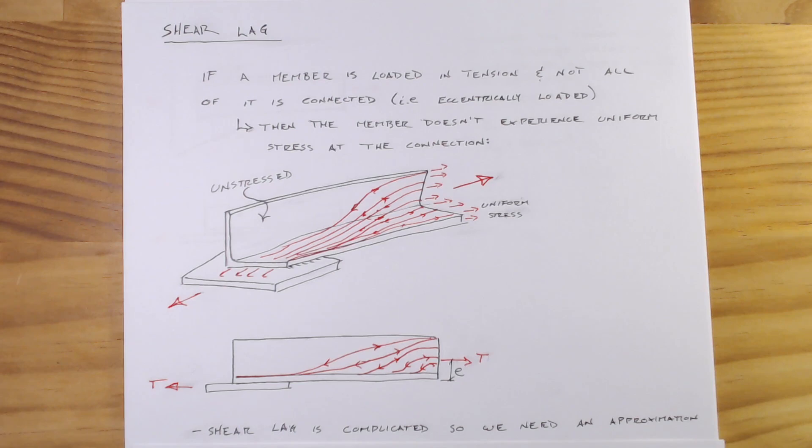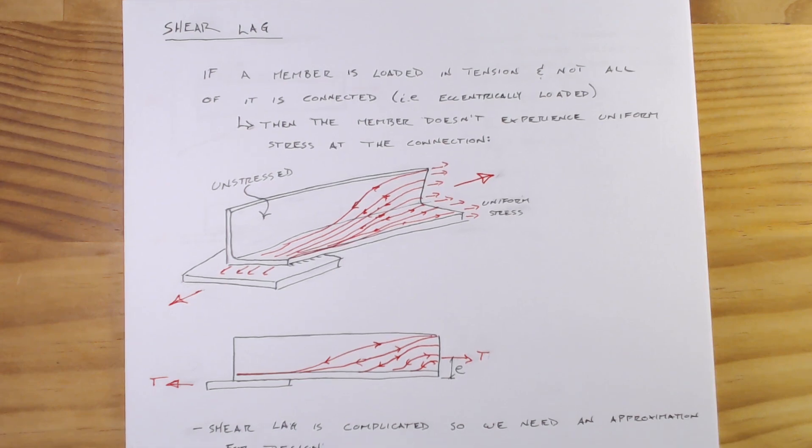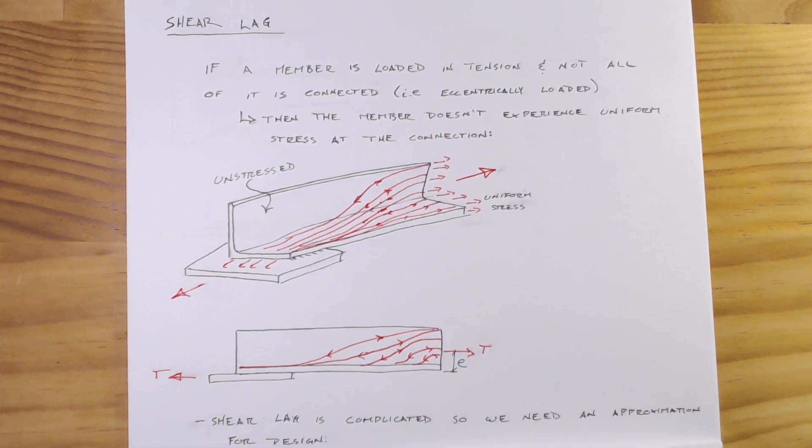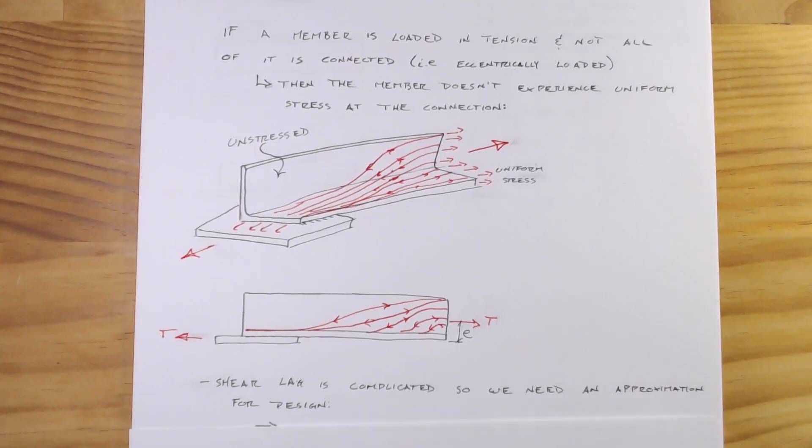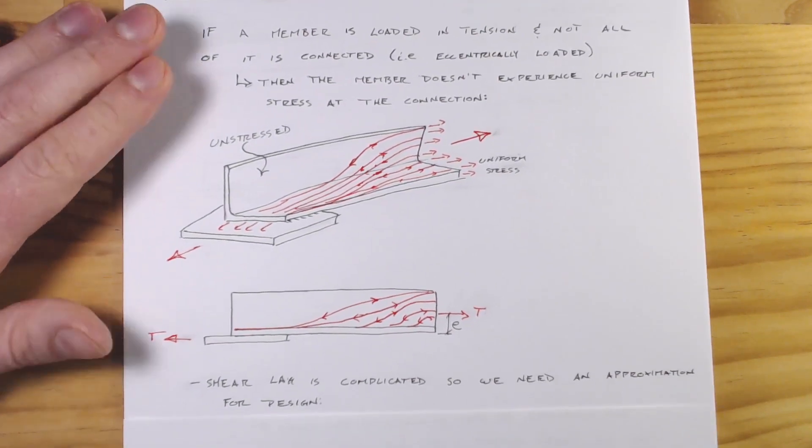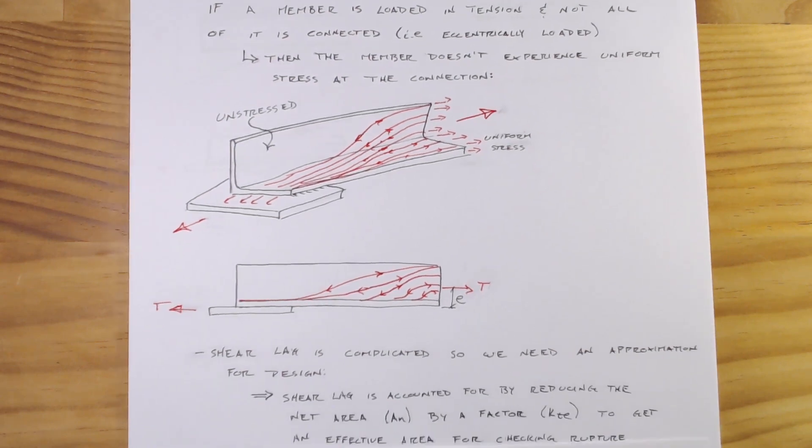It's a difficult thing to design and in fact if we're looking at the math of this it's really complicated. As designers we don't want to spend time doing complicated analysis if ultimately it doesn't make any difference, and if we can come up with an approximation which gives us a good conservative design and a robust design for the loads it's going to see. That's what we do.